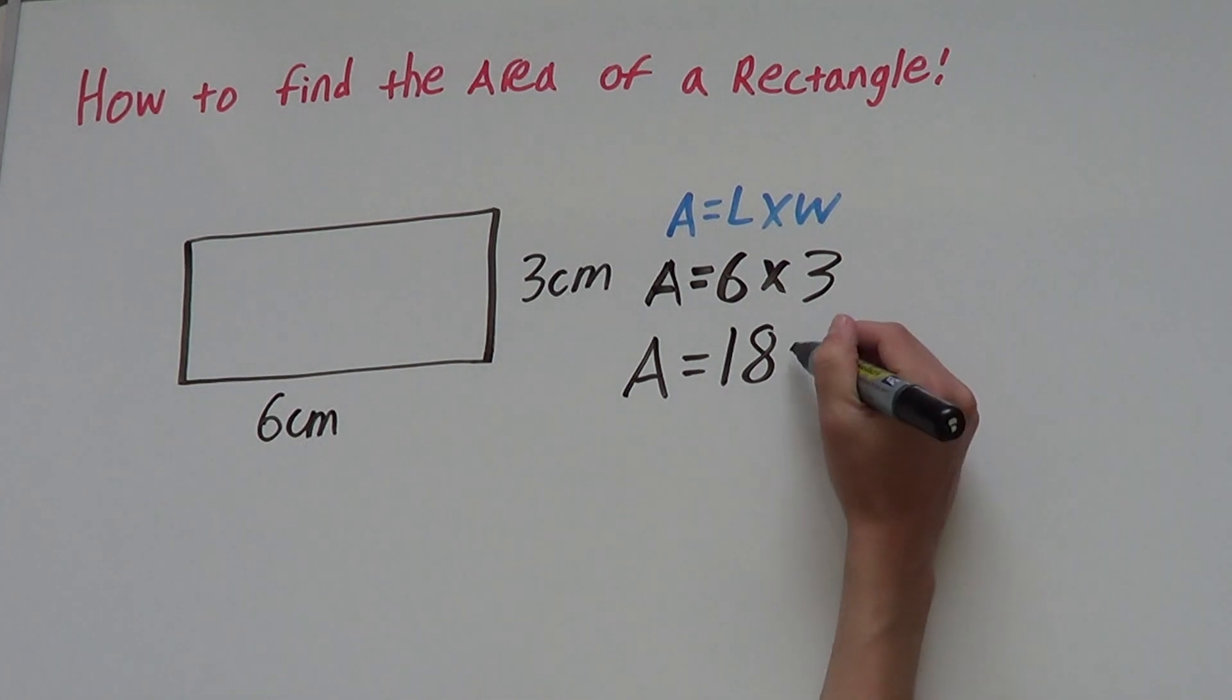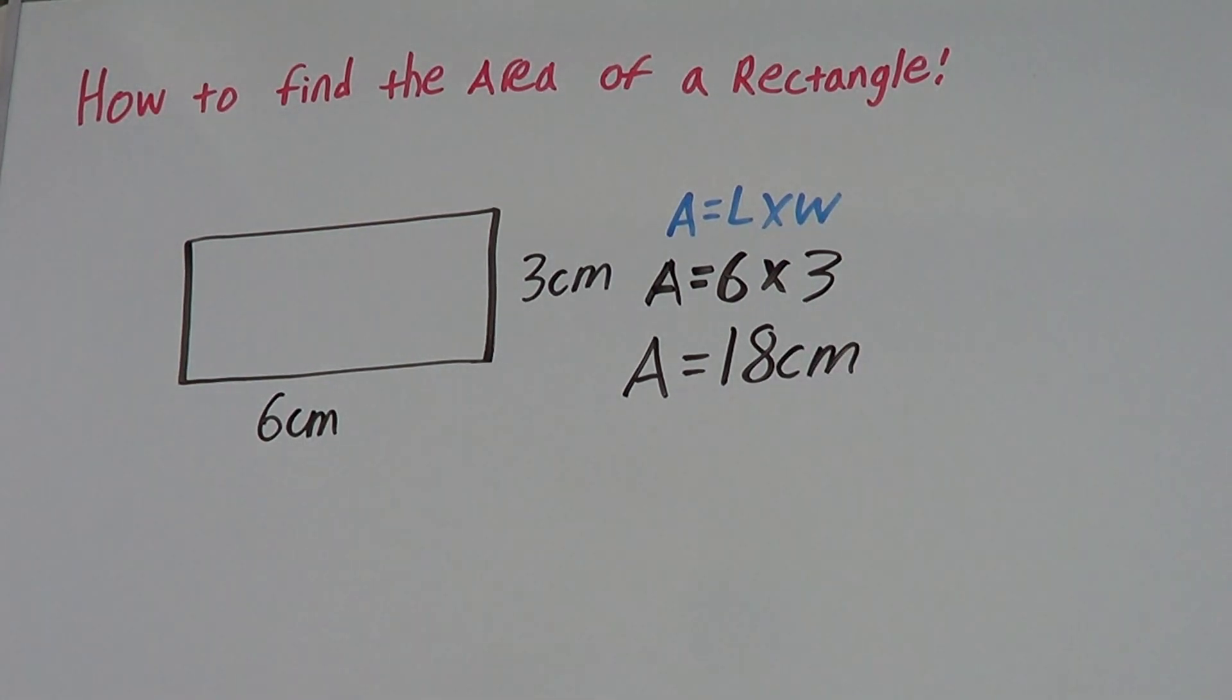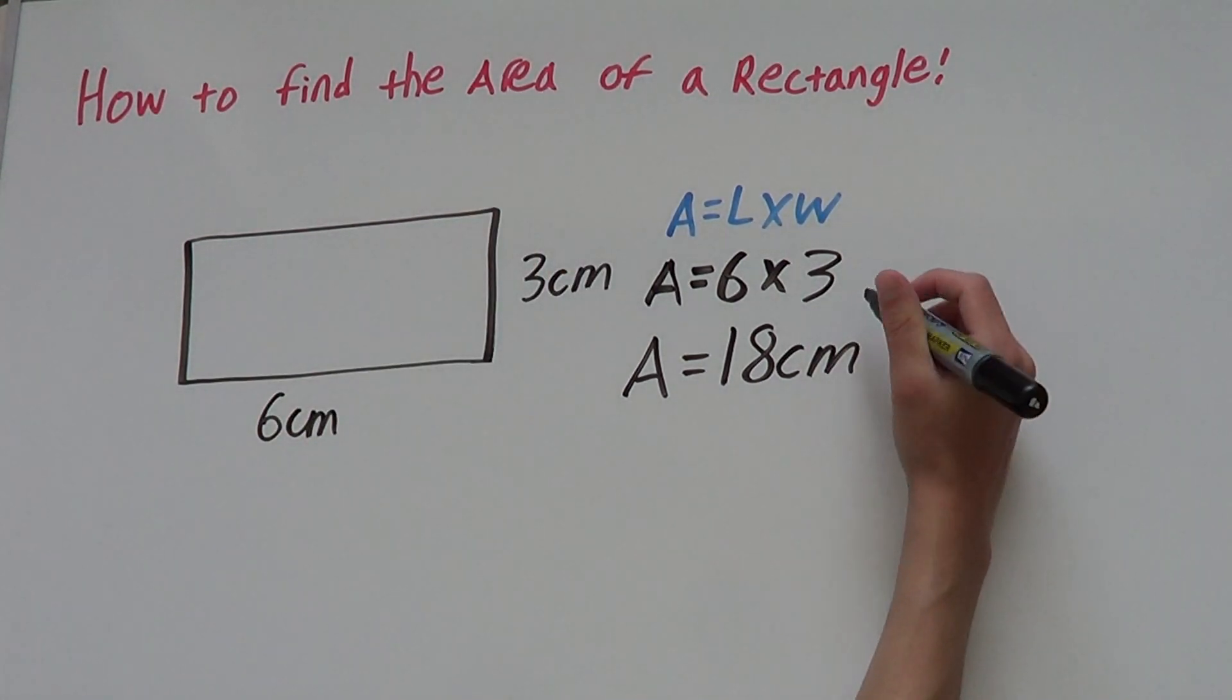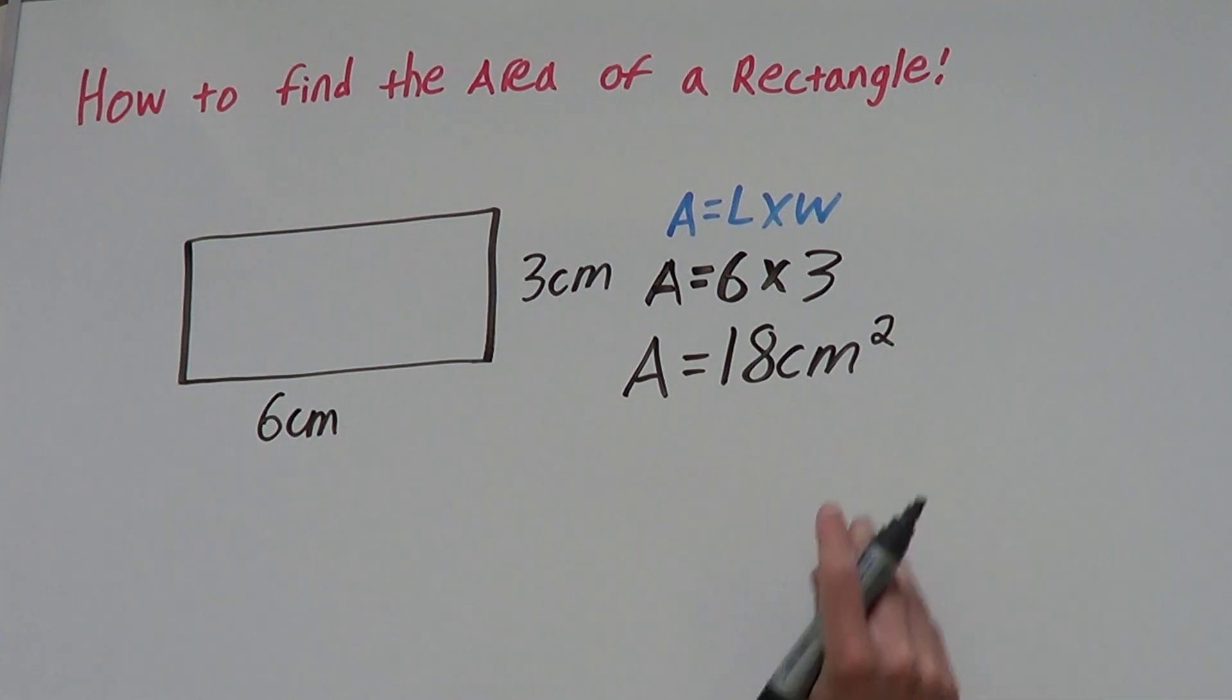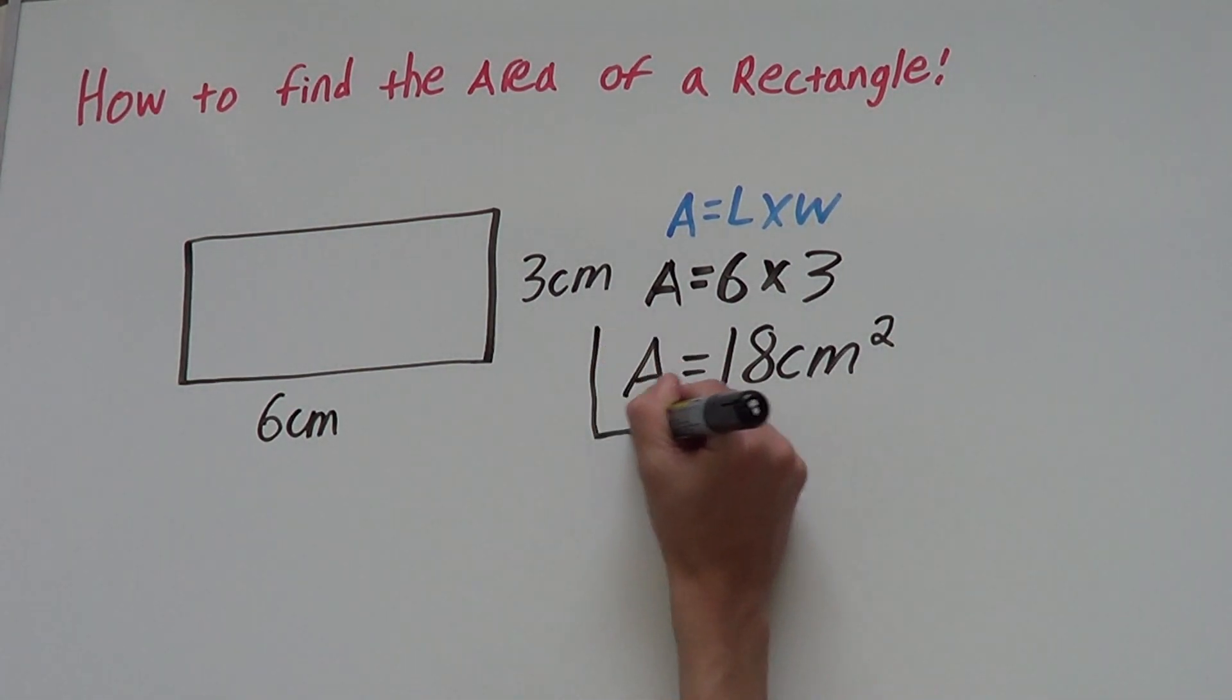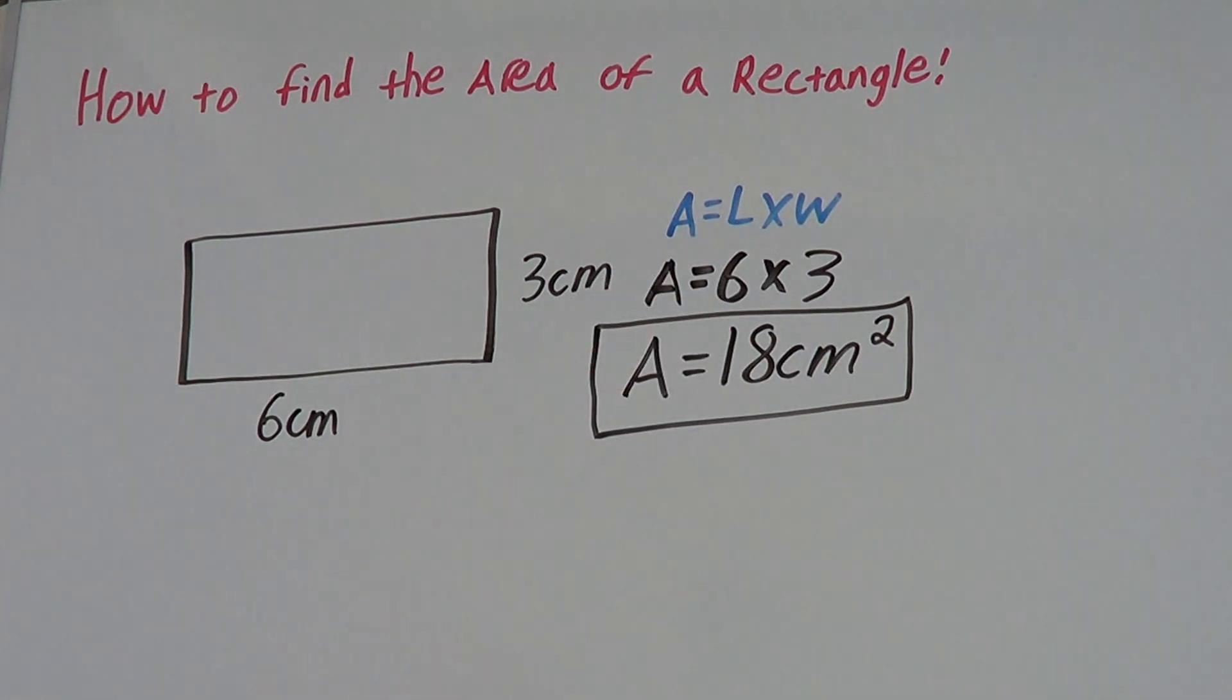We're working in centimeters so we say 18 centimeters and we're finding the area and when you're finding the area you write squared which is a little 2 up like that and that's our answer. It's as easy as that.